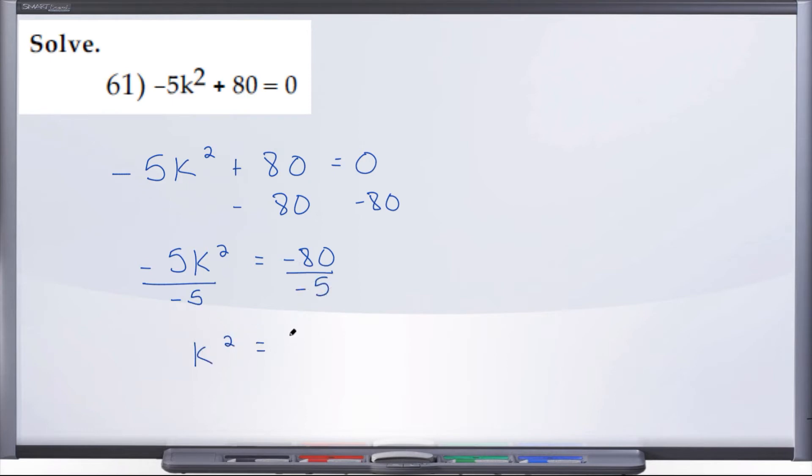k squared equals positive 16. To solve for k, we square root both sides. That gives us k equals, and we know that when we take a square root we take the plus and minus.